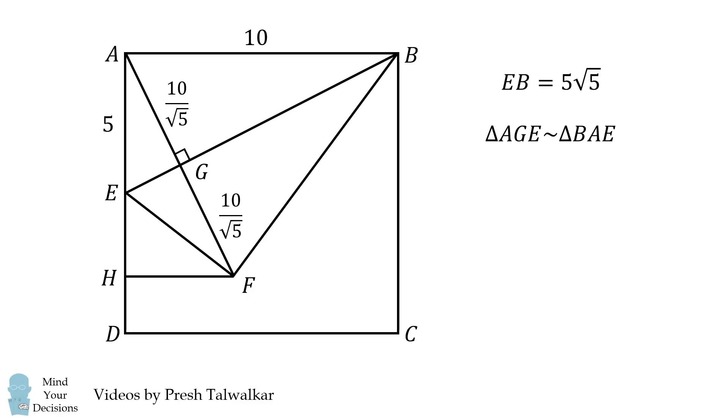Now, let's construct FH. This creates another right triangle, and it shares an angle with the right triangle AGE. Therefore, AHF is similar to the right triangle AGE. But from before, AGE is similar to the right triangle BAE. Therefore, AHF is similar to the triangle BAE.